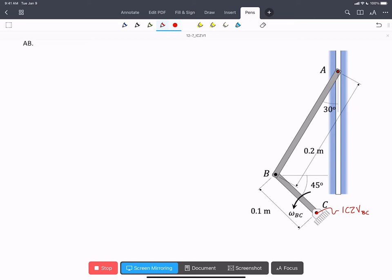For rod AB, that's undergoing general plane motion. It's not pinned anywhere. So we're going to have to find two velocities, the directions of two velocities, in order to find the IC. So if we consider the velocity at B, because BC is pinned, the velocity of B has to be in this direction, perpendicular to the rod BC.